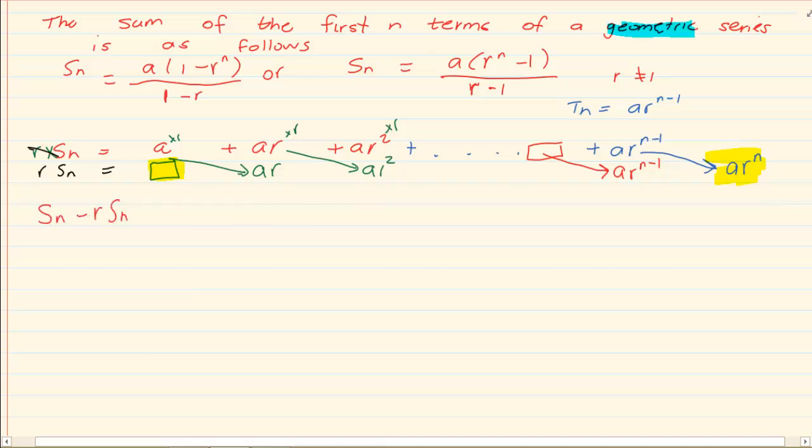So I am going to take the top line basically and I am subtracting the bottom line. Now if I take the top line and I subtract the bottom line. At this level here at the very first one I have a minus nothing which simply gives me a. And then ar minus ar is going to cancel. Ar squared minus ar squared is going to cancel.